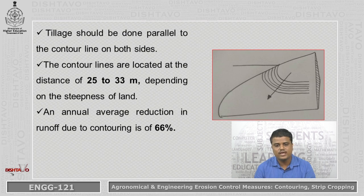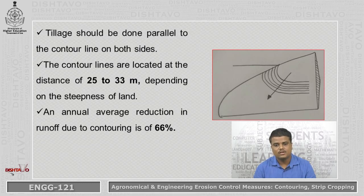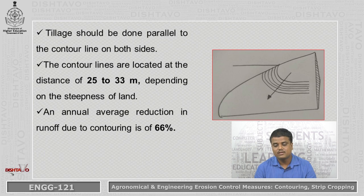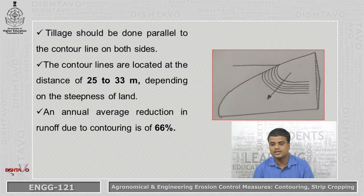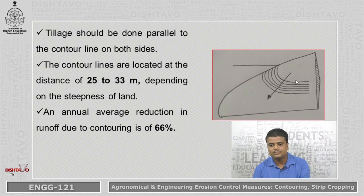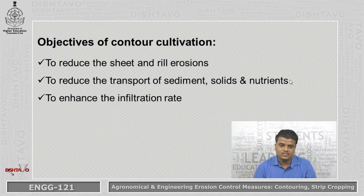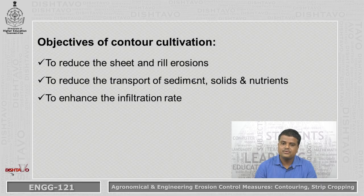Contour lines are lines joining equal elevations on a hill or any place. They are located at a distance of 25 to 33 meters depending on the stiffness of the land. The annual average reduction in runoff due to contour farming is 66 percent. The objectives of contour cultivation are to reduce sheet and rill erosions, to reduce the transport of sediments, solids and soil nutrients, and to enhance the infiltration rate.